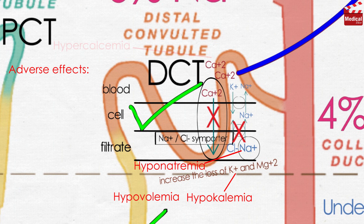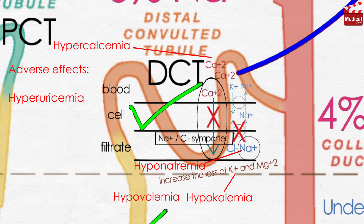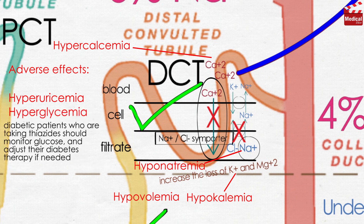They can also lead to hypercalcemia. Thiazides increase serum uric acid, known as hyperuricemia, by decreasing the amount of uric acid excreted by the organic acid secretory system, causing gouty attacks — so they should be used with caution in patients with gout or high uric acid levels. Thiazides can cause hyperglycemia and glucose intolerance, so diabetic patients should monitor glucose and adjust their diabetes therapy if needed.